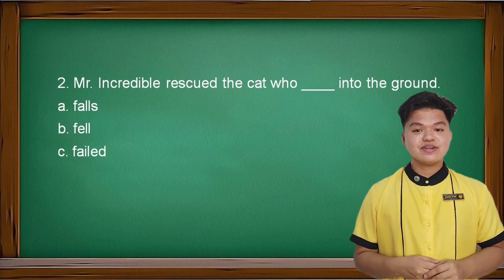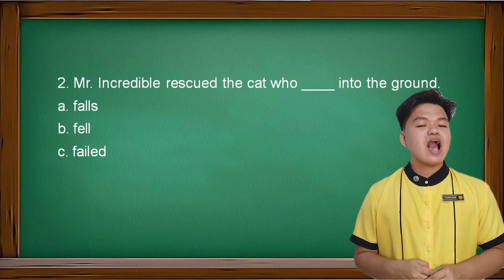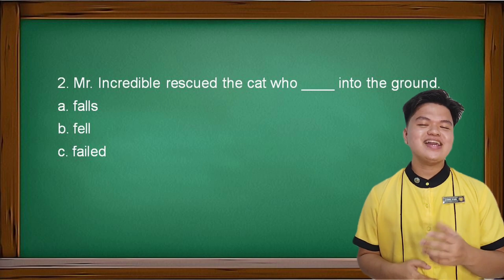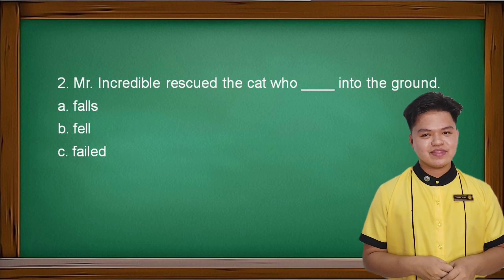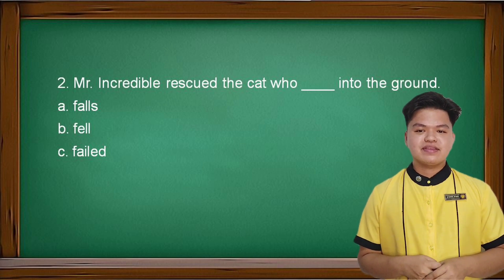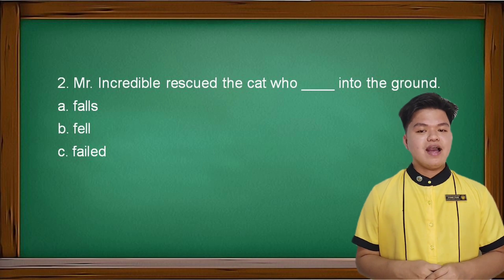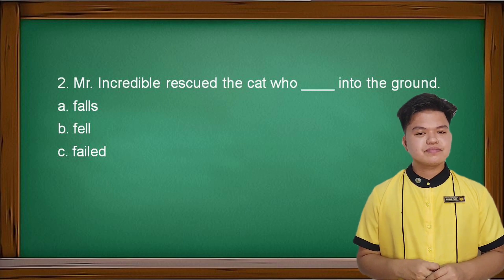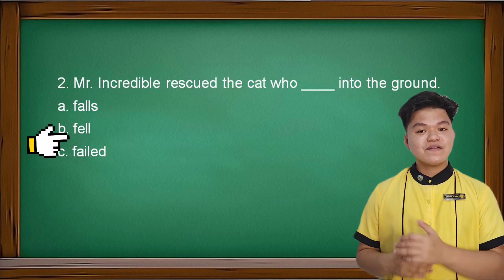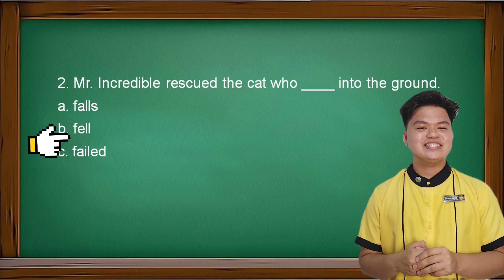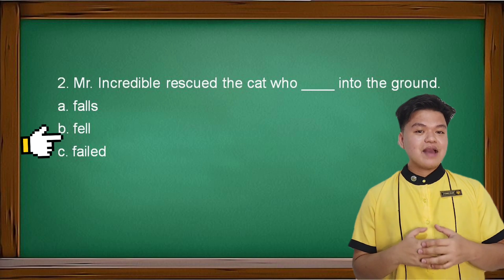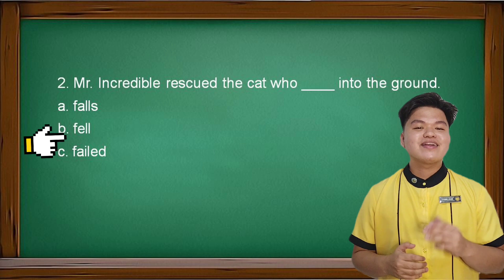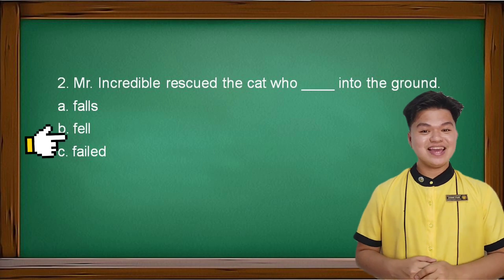Number two: Mr. Incredible rescued the cat who blank into the ground. A: falls, B: fell, or C: failed. Correct! The answer is 'fell' because the cat fell into the ground and Mr. Incredible rescued it. You're doing a great job, kids!